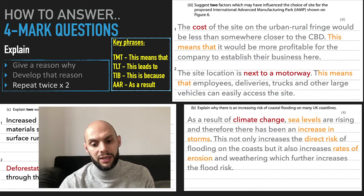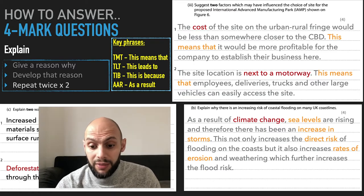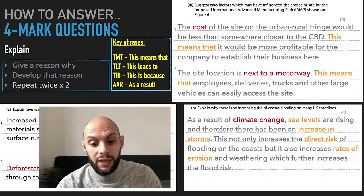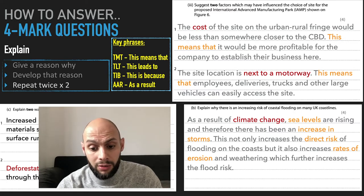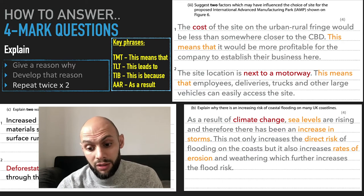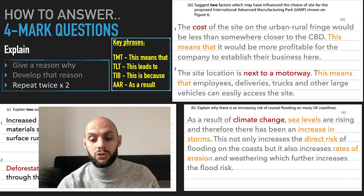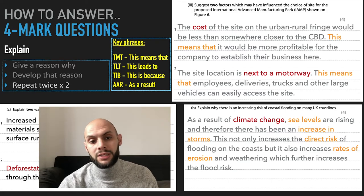So my main point here is climate change. And then I've developed that to say sea levels are rising, therefore an increase in storms. This is not only a direct risk, but it also increases the rate of erosion and weathering, which further increases the flood risk. So I've got plenty of content there to score my four marks and my one point is climate change.